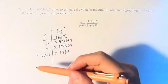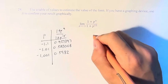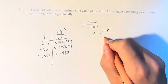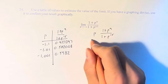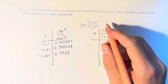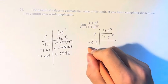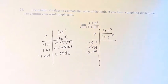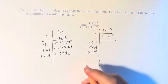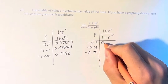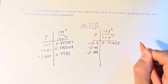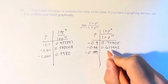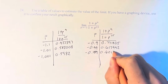We also have to try from the other direction — from the right — so values that are greater than negative 1. Which, since they are negative, means they have a smaller magnitude. So we have negative 0.9, negative 0.99, and negative 0.999. The corresponding values, plugging them into your calculator, are 0.771405, 0.617992, and 0.60178.